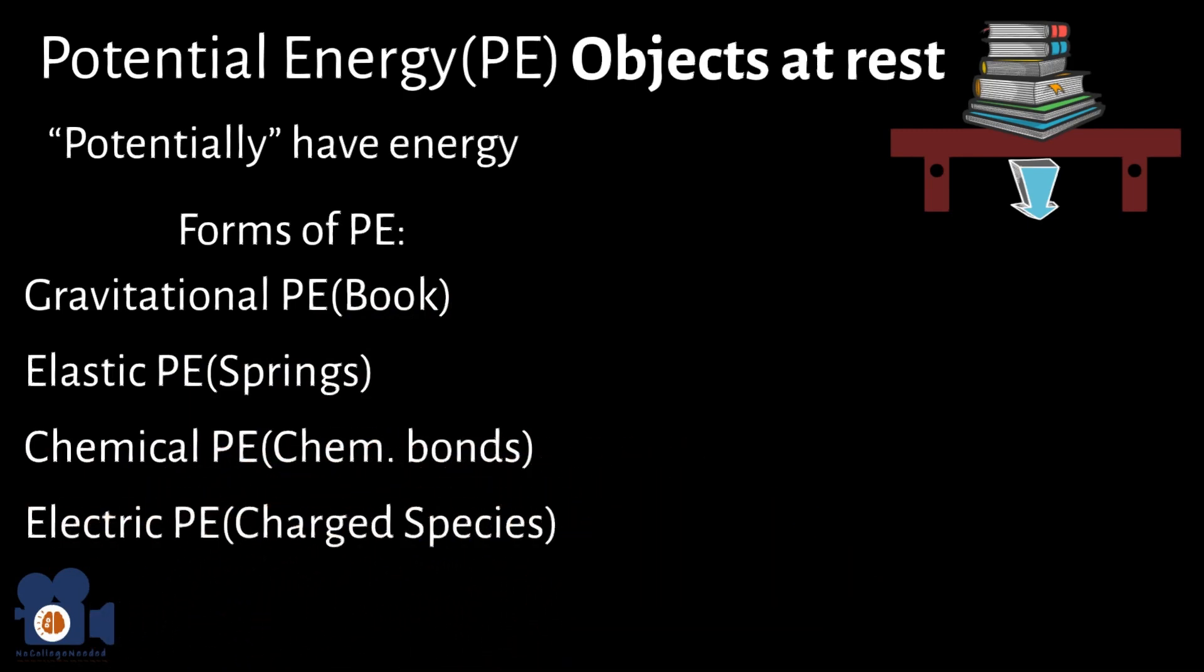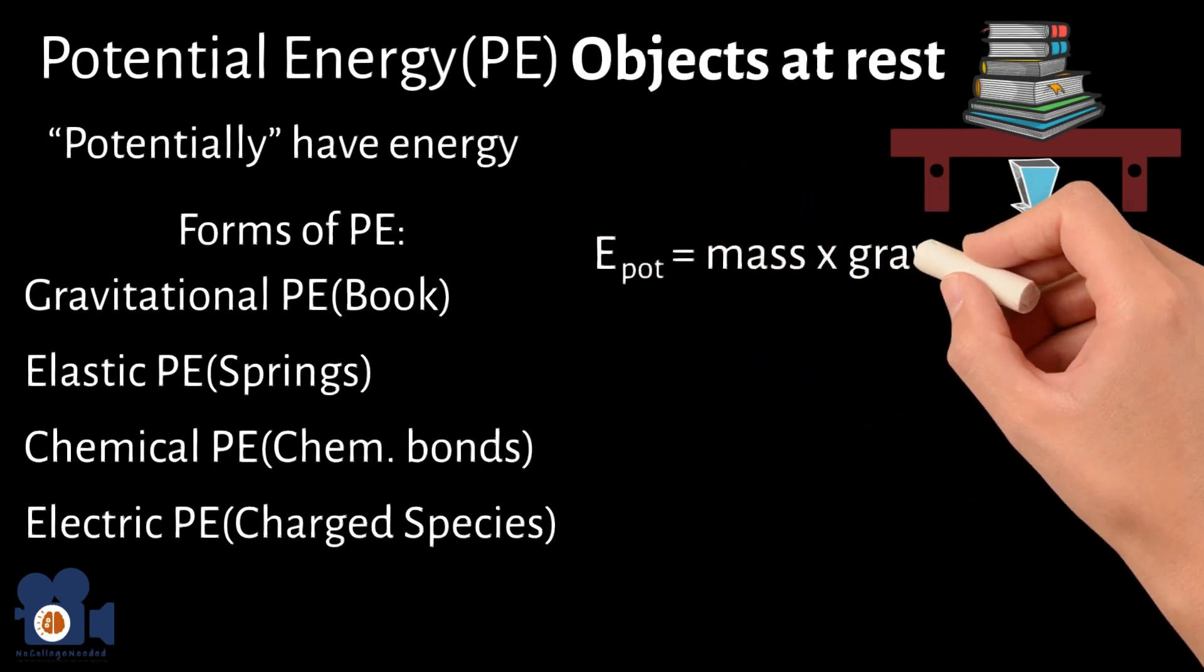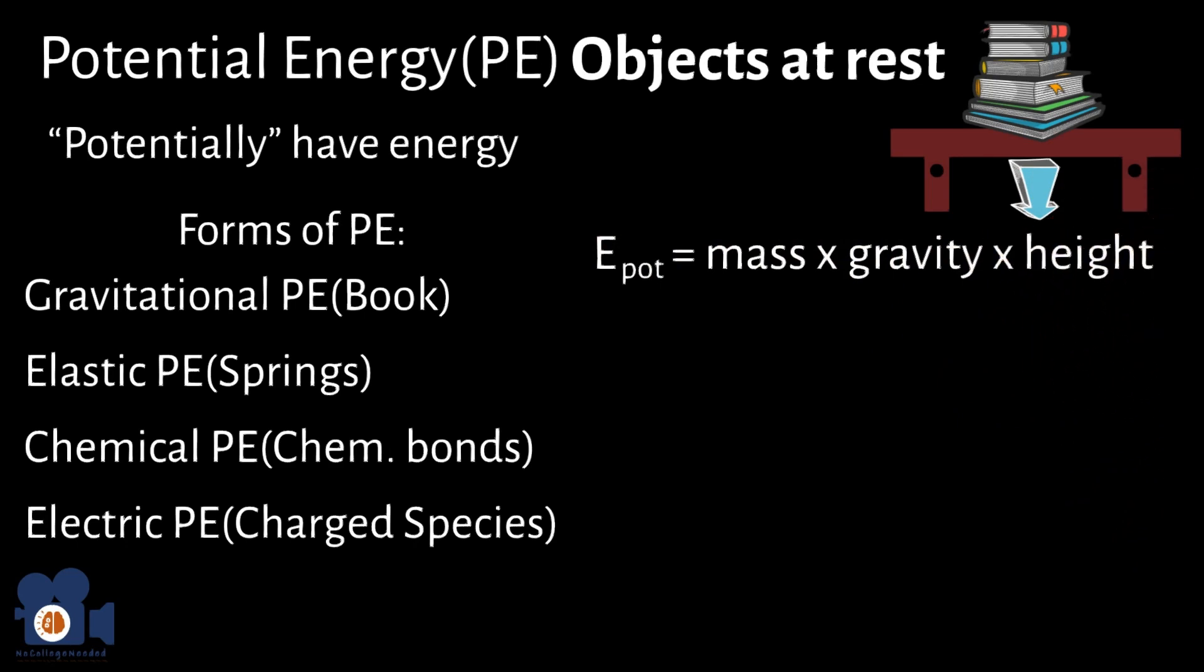Let's go over the two most common equations relating to potential energy. The first is E potential equals mass times gravity times height. Hopefully that one is pretty straightforward.